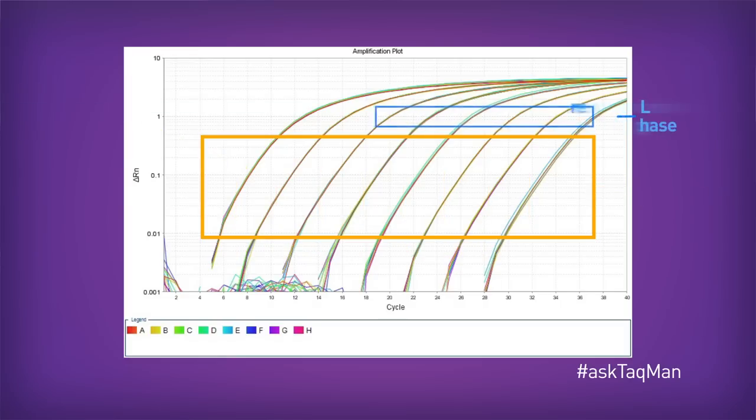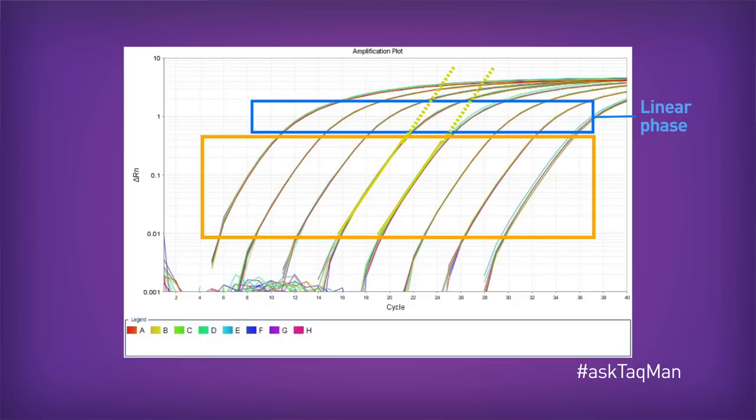But as the reactions move into the later cycles, the so-called linear phase, that predictability starts to go away. Our nice straight lines begin to curve, totally messing up the even spacing. And the precision drops off considerably.